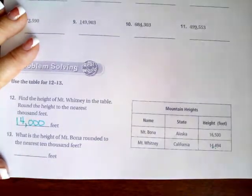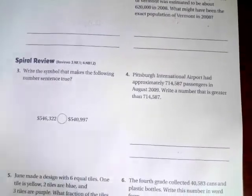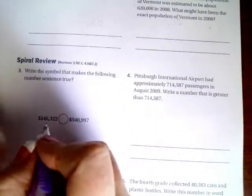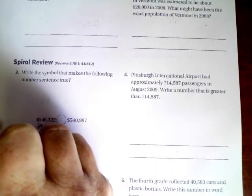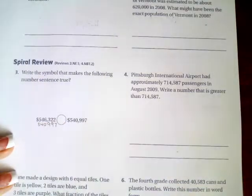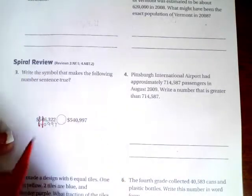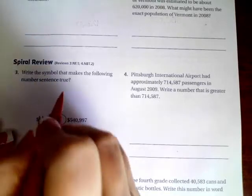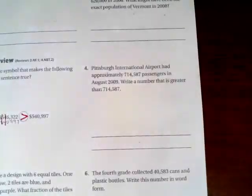You guys go ahead and do number 13. We're going to go over to the back — you guys are going to do the lesson check, just like always. We're going to go down and do the spiral review. Now, it wants to know which one of these is larger. So I'm going to write the number super small underneath it so that we can compare it number by number. Our 5 is the same. Our 4 is the same. Now, this one has a 6 and that one has a 0, so that one's going to be bigger.